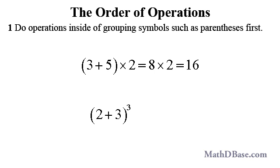If we have 2 plus 3 quantity cubed, we should add 2 and 3 first to get 5, then cube the 5 to get 125.